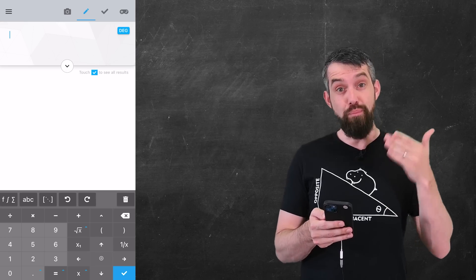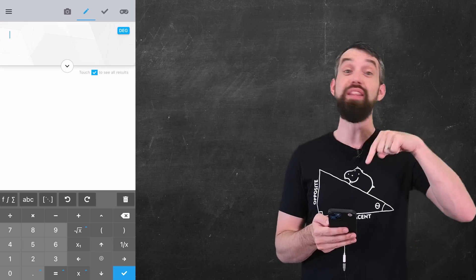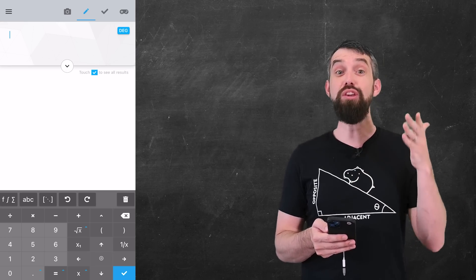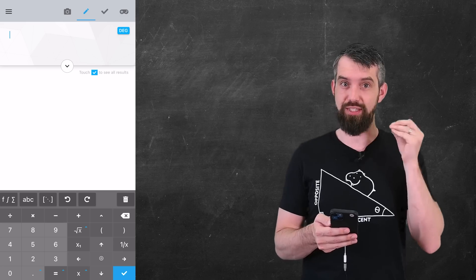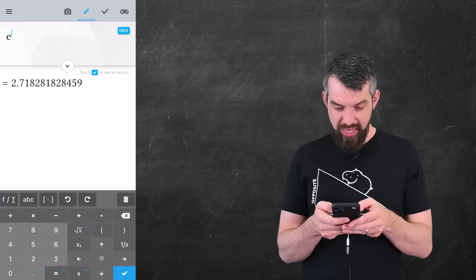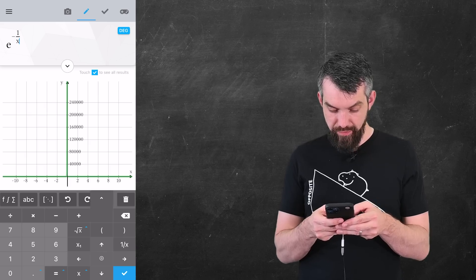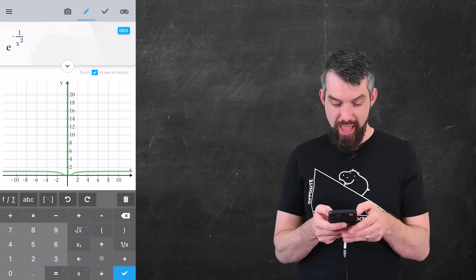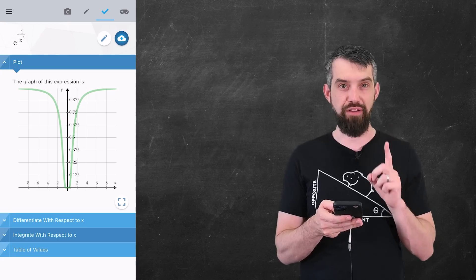To help me graph this function, I'm going to turn to Maple Calculator for your phone. The link is down in the description. And again, thank you to Maple for sponsoring today's video. So, I'm going to plot the exponential, and it's going to be minus 1 divided by x squared. And here we get this delightful plot.